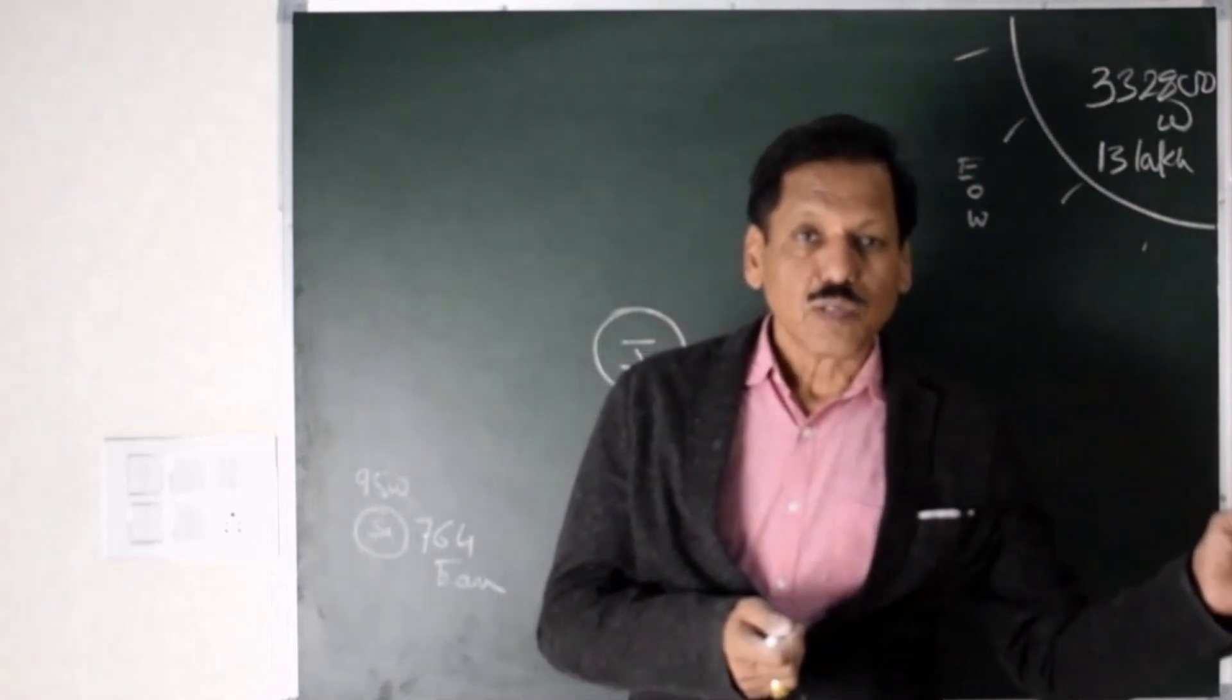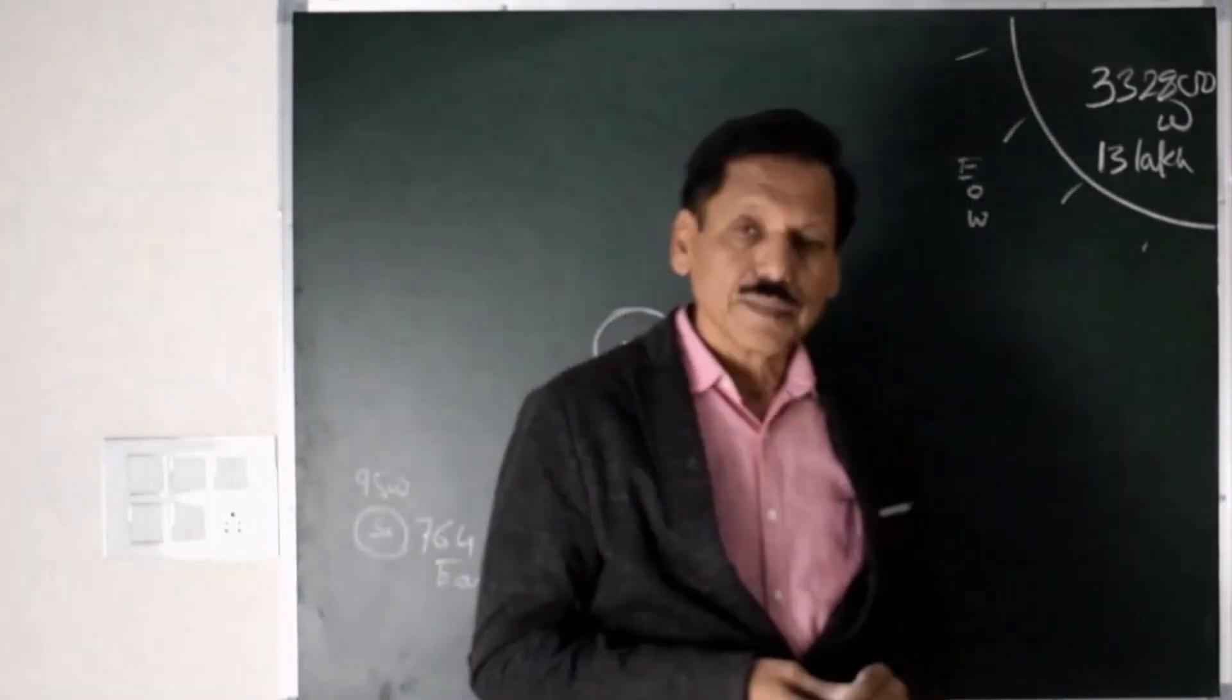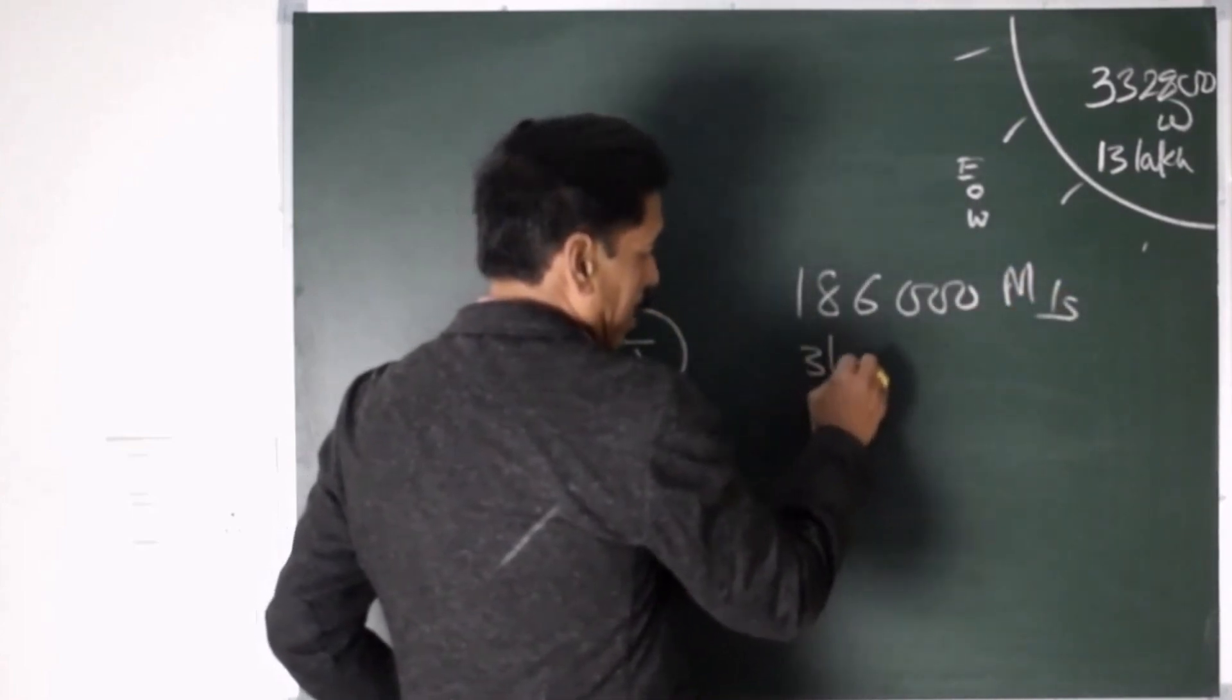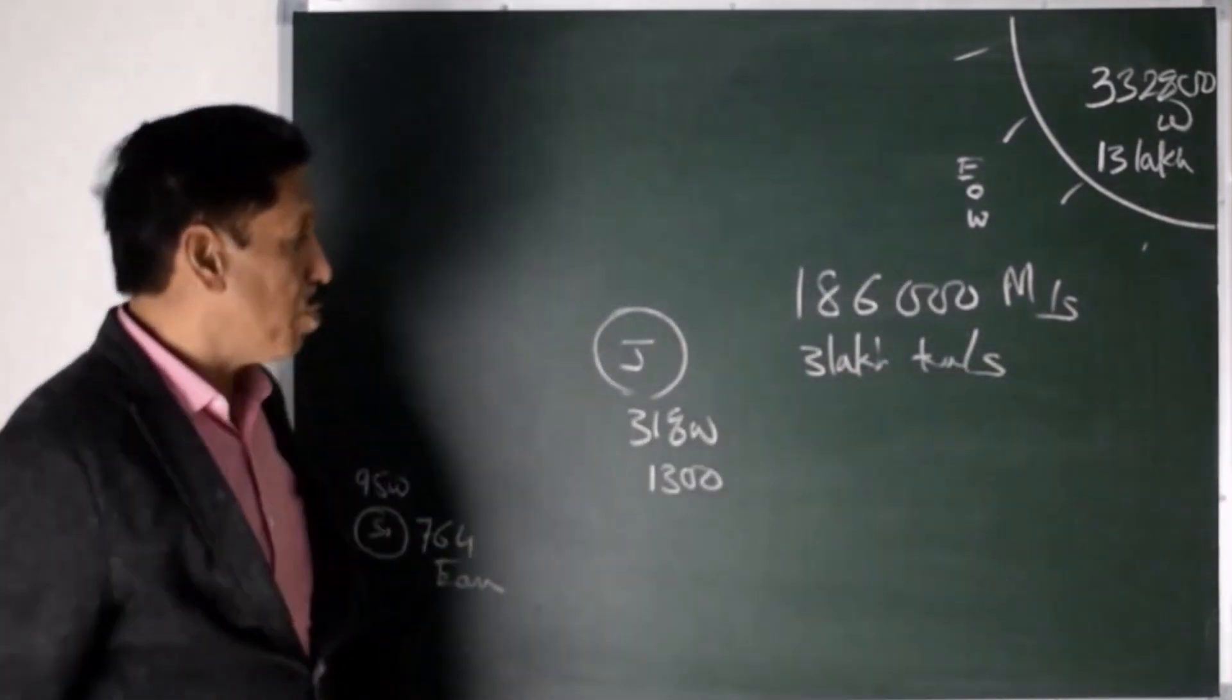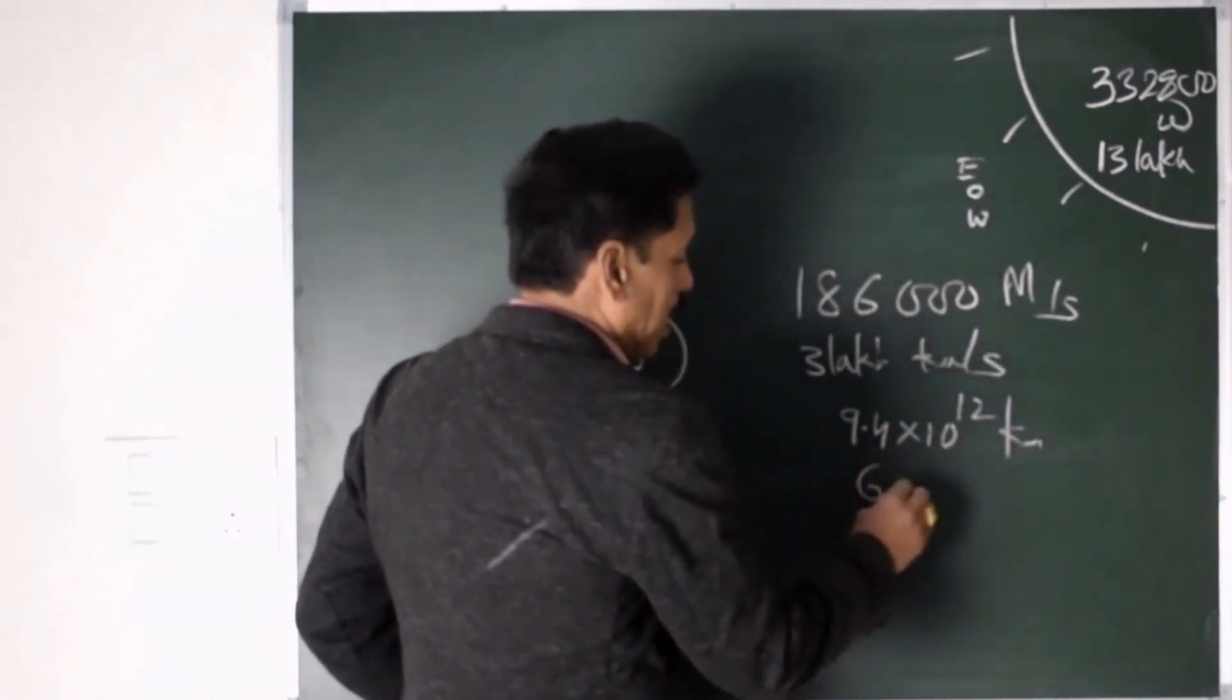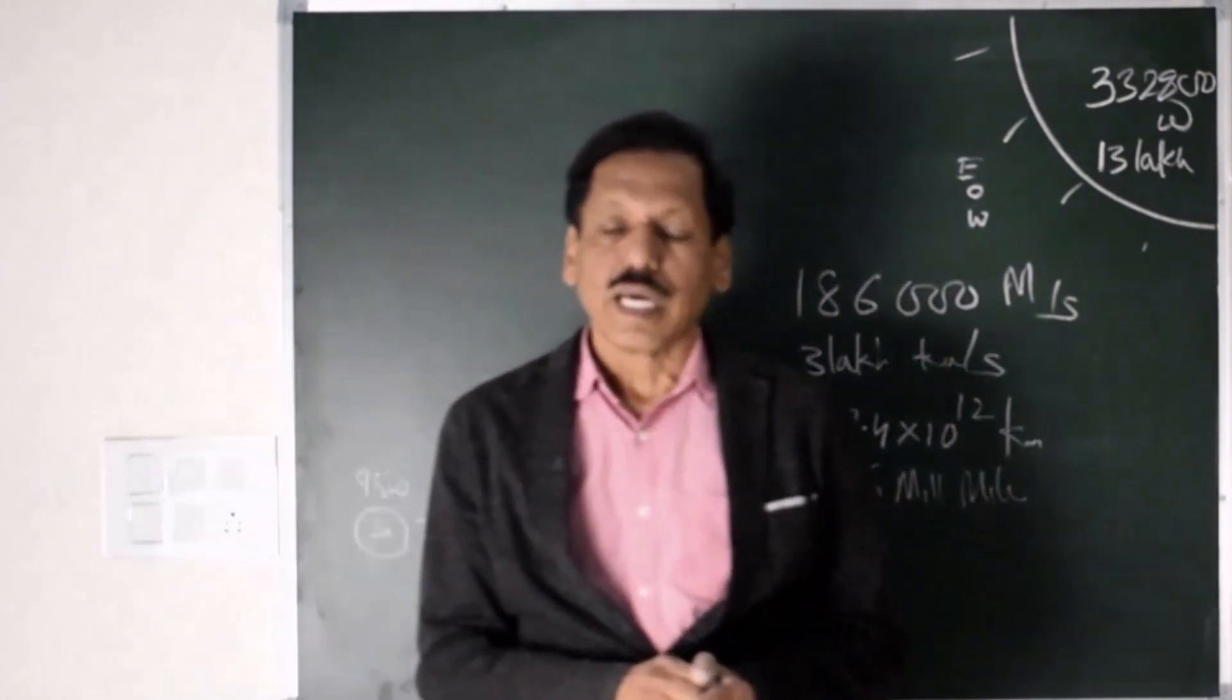That means, if the light has to travel from one end to other end of Milky Way, it will take more than one lakh years. And what is this light year? Light travels at a speed of 1 lakh 86,000 miles per second or 3 lakh kilometers per second. So, how much distance would be covered in one year? That is something like 9.4 into 10 to the 12 kilometers or it is something like 6 million miles.